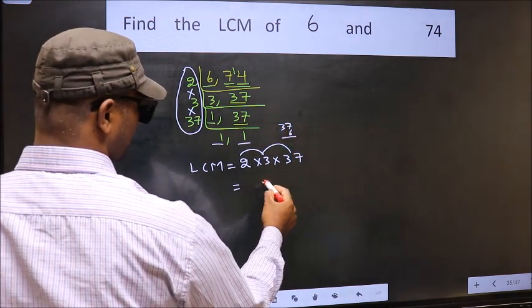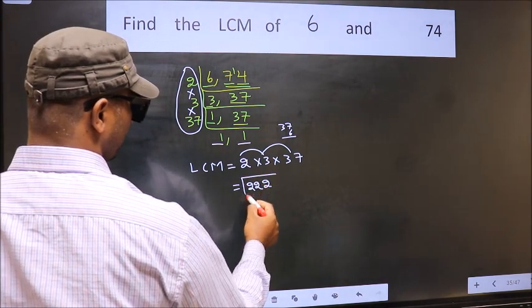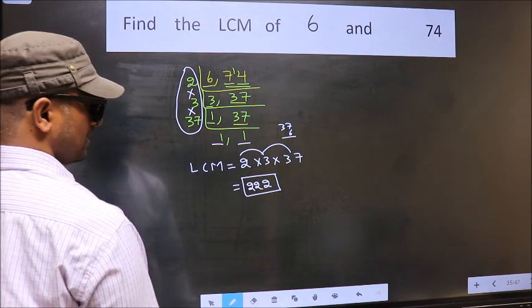6 into 7 is 42. 6 times 3 is 18 plus 4 is 22. So we get 222 as our LCM.